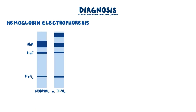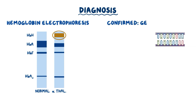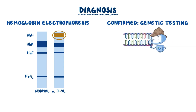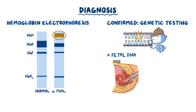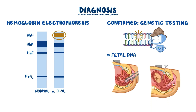Hemoglobin electrophoresis can be done to see which hemoglobin types are present. For example, HbH will be seen as an extra band ahead of HbA on electrophoresis. The diagnosis is confirmed by genetic testing to look for hemoglobin gene mutations. This can also be done prenatally by testing fetal DNA obtained through either chorionic villus sampling or amniocentesis.